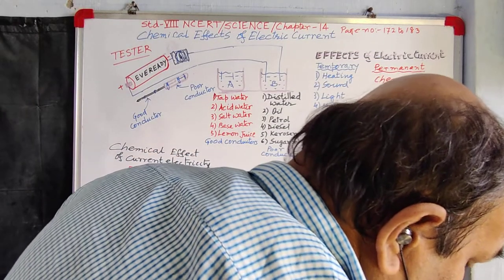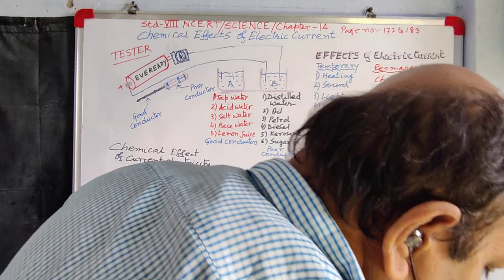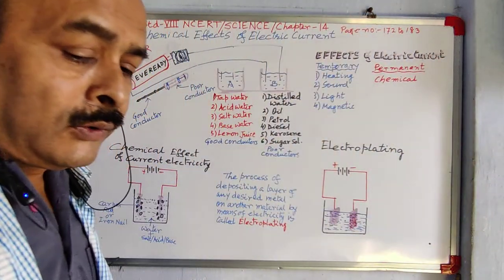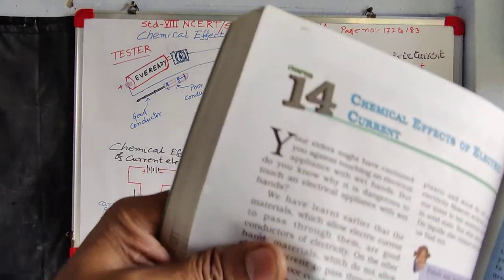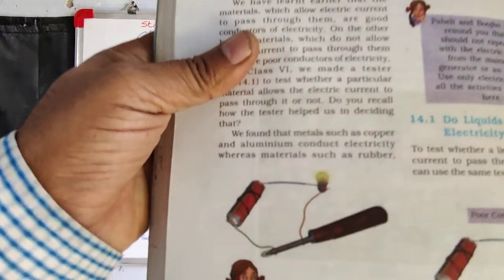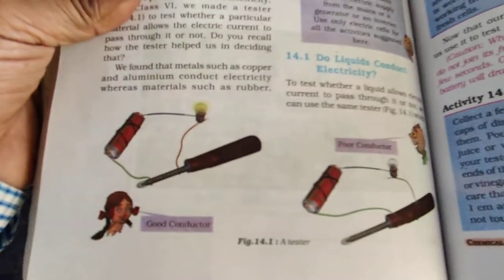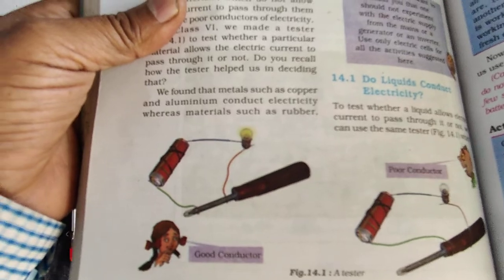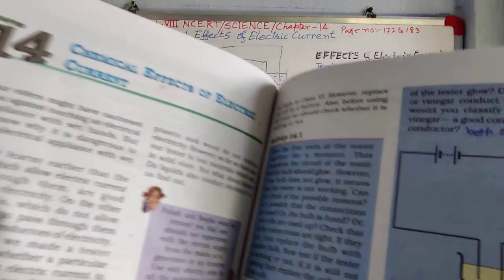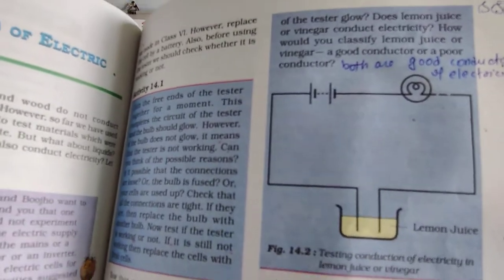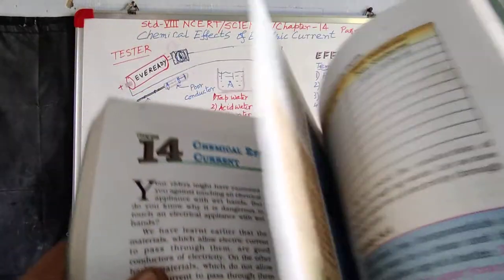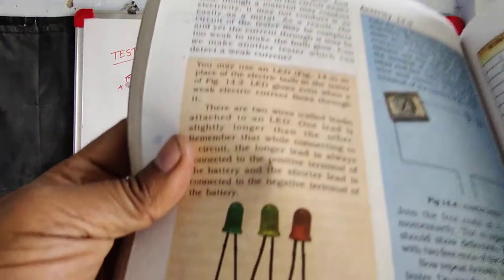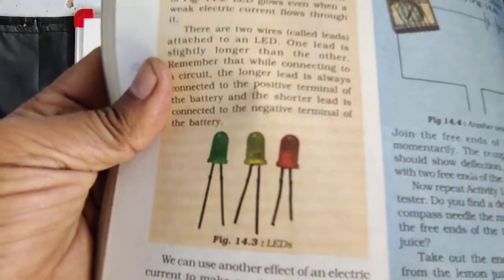Now this chemical effect can be explained with a diagram. In your textbook you can see — before going to chemical effect, let us introduce the textbook. This is the poor conductor and good conductor experiment, and this is the experiment with liquid — lemon juice — and this is the LED bulb.